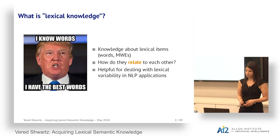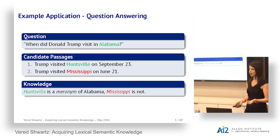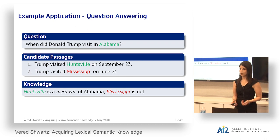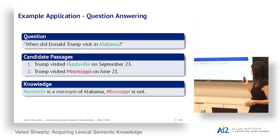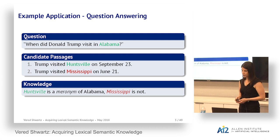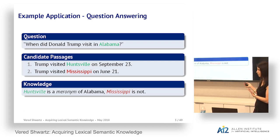This information can be helpful for many semantic applications that need to deal with lexical variability. For example, in question answering, if we ask the system 'When did Donald Trump visit Alabama?', the system would search the web for texts with lexical overlap. It may retrieve 'Trump visited Huntsville on September 23rd' and 'Trump visited Mississippi on June 21st.' Only the first is correct because Huntsville is in Alabama, but Mississippi is not — even though it's close. A system needs this kind of knowledge to answer correctly.